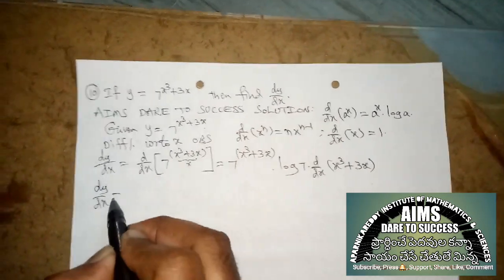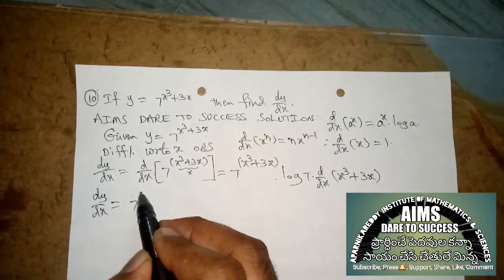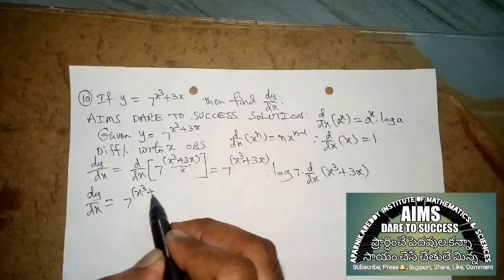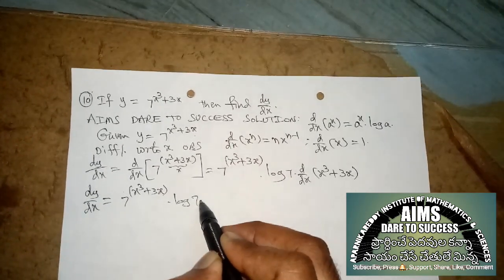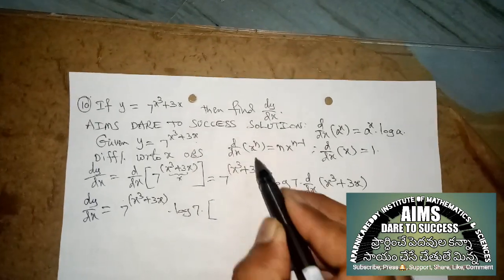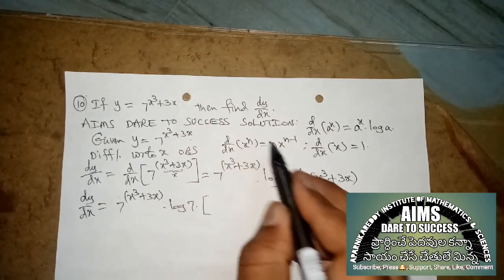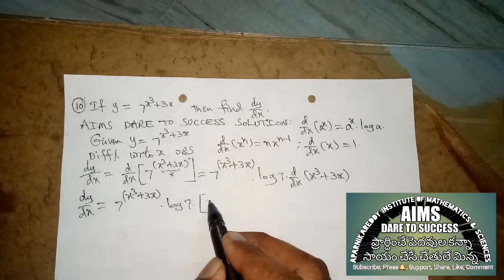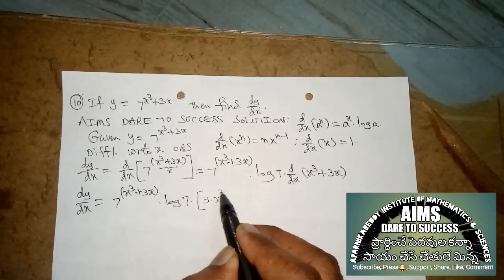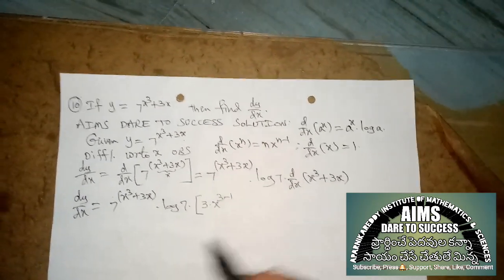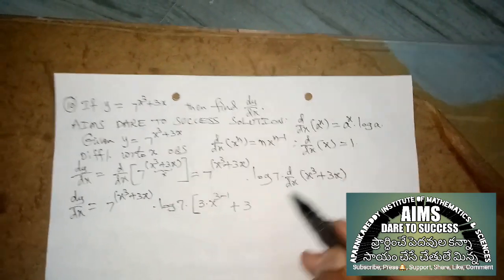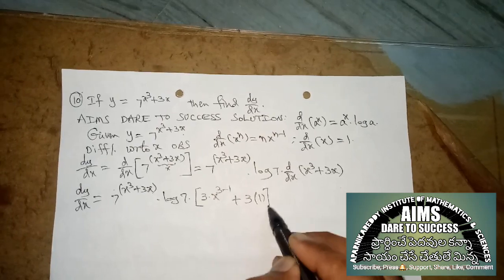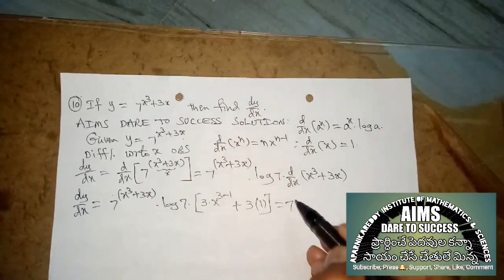dy by dx equals 7^(x³ + 3x) into log(7) into d by dx of x³. Here n is 3, so substitute 3x². Also d by dx of 3x equals 3. We get 7 power (x³ + 3x) log(7) times (3x² + 3).